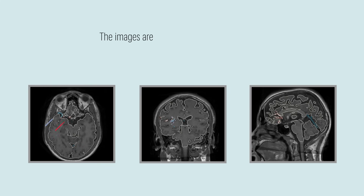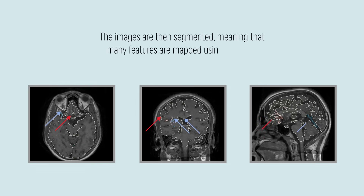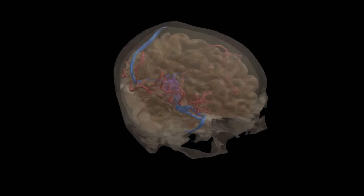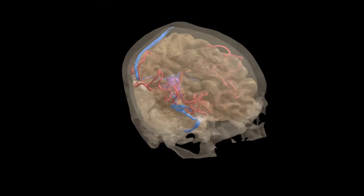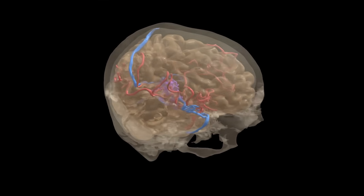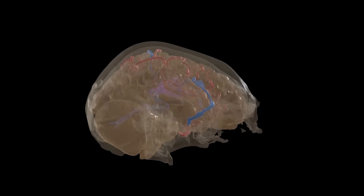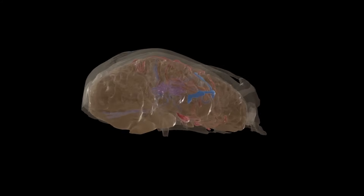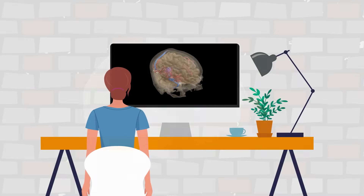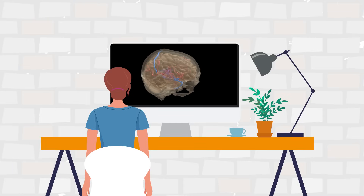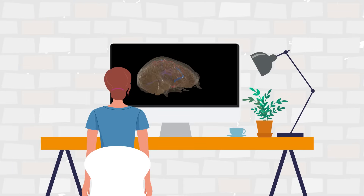The images are then segmented, meaning that many features are mapped using software. Features of interest, such as individual blood vessels or bones, can be colored to make them stand out, and the images are then stitched together to form a 3D model. The resulting models can be viewed on virtually any computer or mobile device, with no need for specialized software.